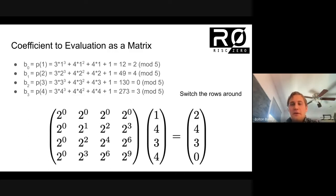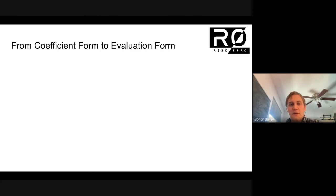I'll move on to presenting how to do this fast coefficient form to evaluation form trick, and I'll present it in a way that's relevant to the other things that are done in the Fry protocol.